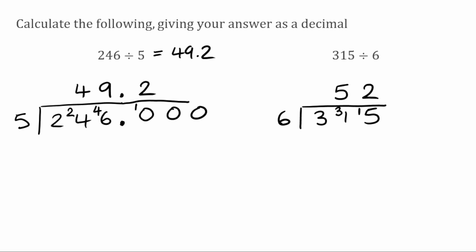So because we've still got our remainder and we've reached our last digit, we're going to extend our line, put a decimal in the answer, a decimal after our 315, and we're just going to put some zeros. We had 6 times 2 which was 12, we needed 15, that leaves us with a remainder of 3, so that's what we carry over to this 0. How many times does 6 fit into 30? Well that'll go 5 times exactly, leaving us with no remainder, so our answer to 315 divided by 6 would be 52.5.